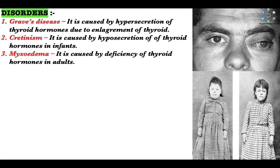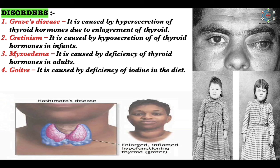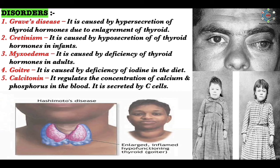Myxedema is caused by deficiency of thyroid hormones in adults and is more common in women than in men. The patient lacks alertness, intelligence, and initiative, and also suffers from slow heartbeat, lower blood pressure, decreased body temperature, and retarded sexual development. Goiter is caused by deficiency of iodine in the diet, causing enlargement of the thyroid gland. Calcitonin regulates the concentration of calcium and phosphorus in the blood and is secreted by C cells.